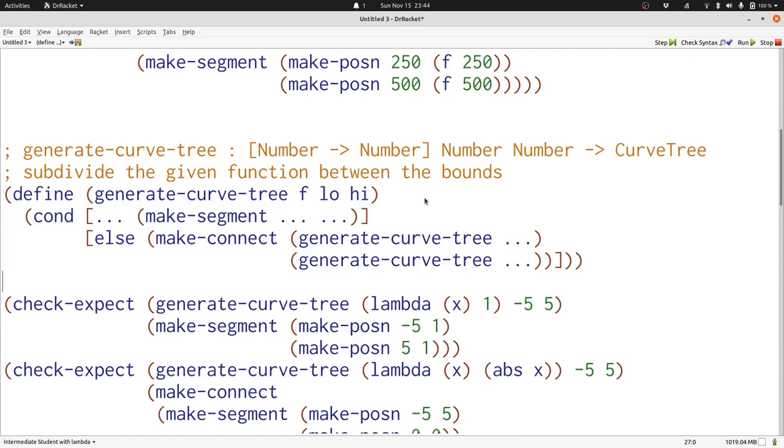One possibility is we're producing a segment. We know that that segment is going to start at low and f of low and end at high and f of high. So let's write in those pauses. Now let's think about the recursive calls.